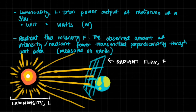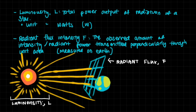The most important thing is to know some of these terminologies. Luminosity, denoted by L, is the total power output of radiation of a star. Imagine a star somewhere in the universe constantly giving out radiation — light, heat, all kinds of it — every single second. Luminosity is the total amount of energy it gives out every second, and so the unit for that is watts.